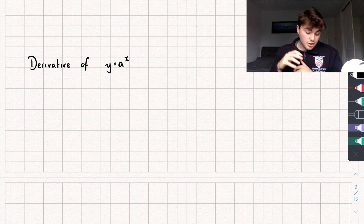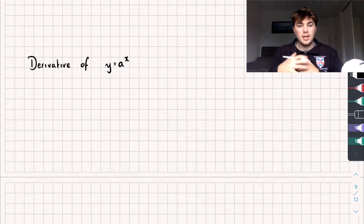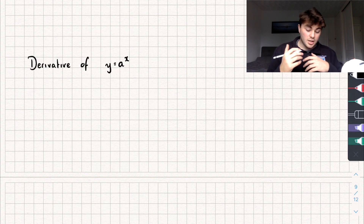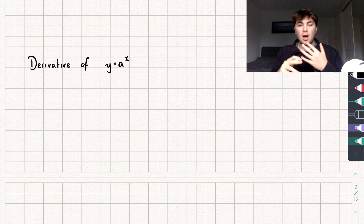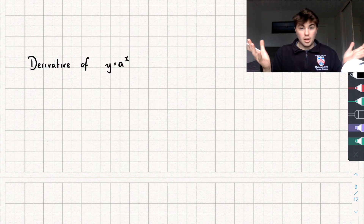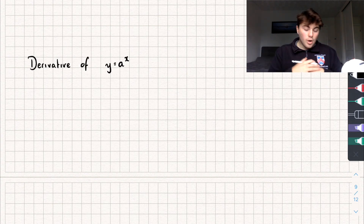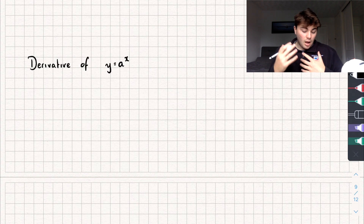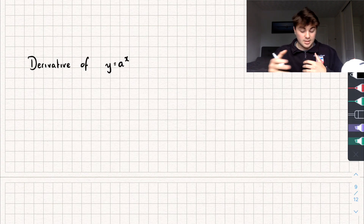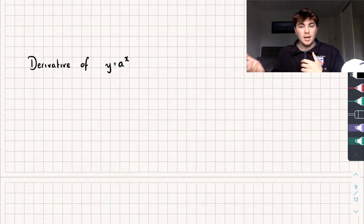Hello, in this video I'm going to teach you how to calculate the derivative of y equals a to the x. So a could be a number — it could be 2, 5, a number — or it could be a constant that has been given a letter, so it might just be y equals a to the x.